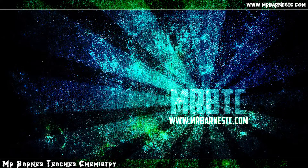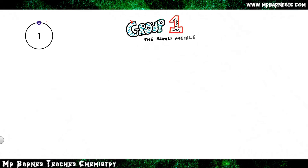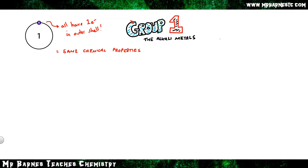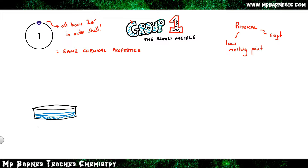The second section looks at the alkali metals. Everything in group 1 has one electron in the outer shell, which means they have the same chemical properties and react the same way. The physical properties are that they are soft and have low melting points. You need to be able to describe what happens when you take the alkali metals and put them into water.